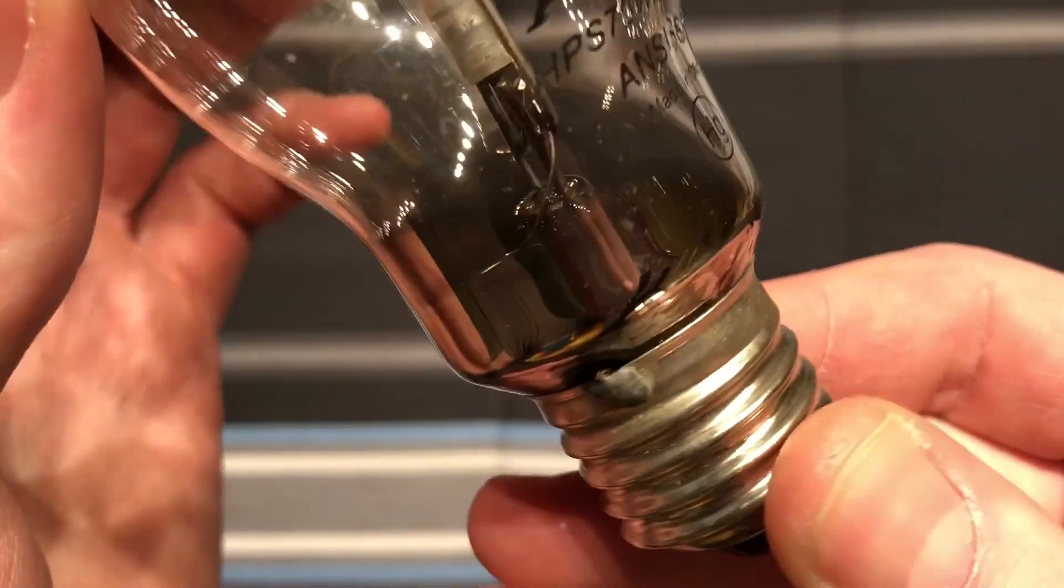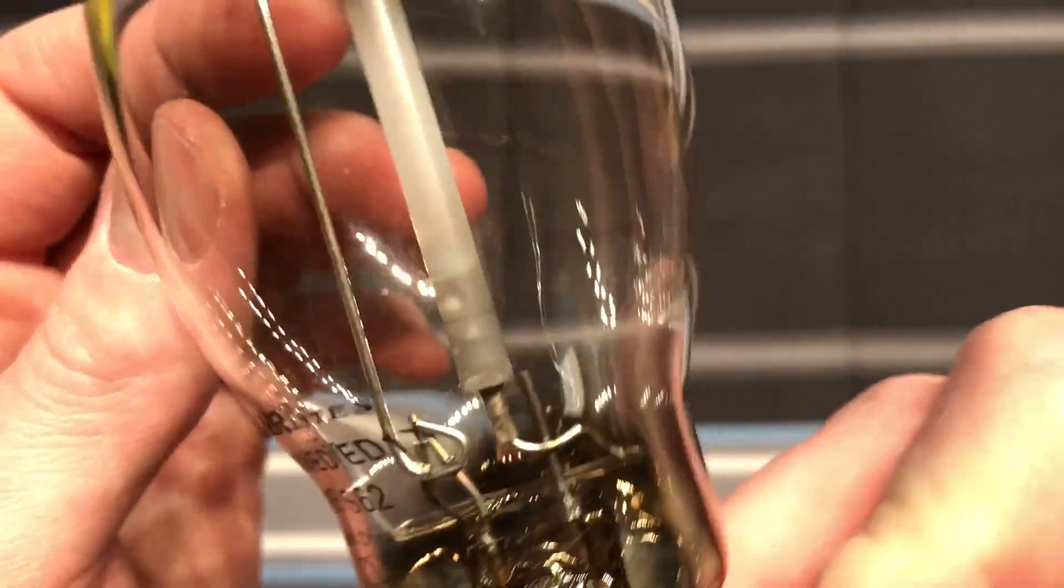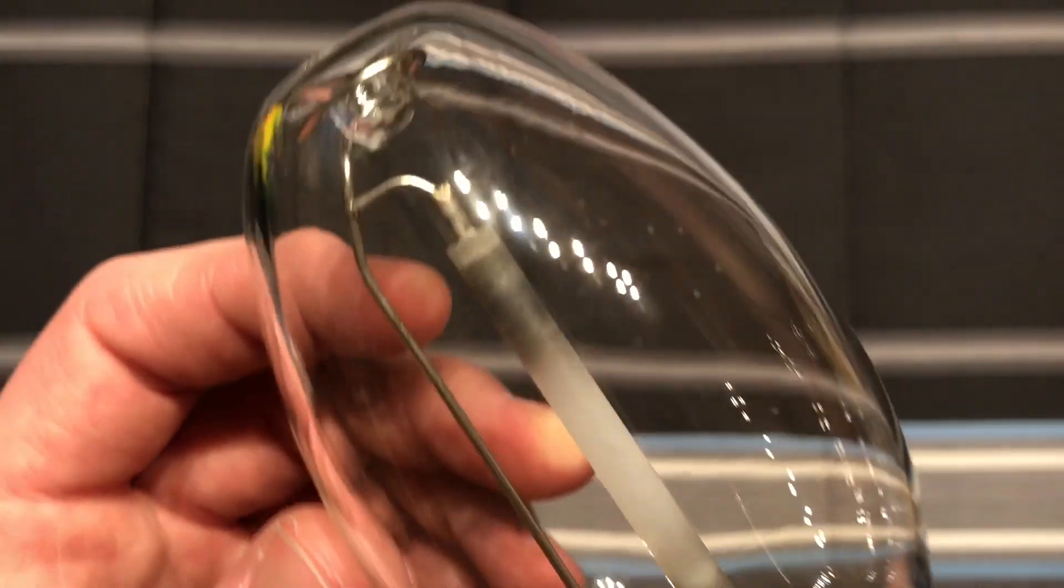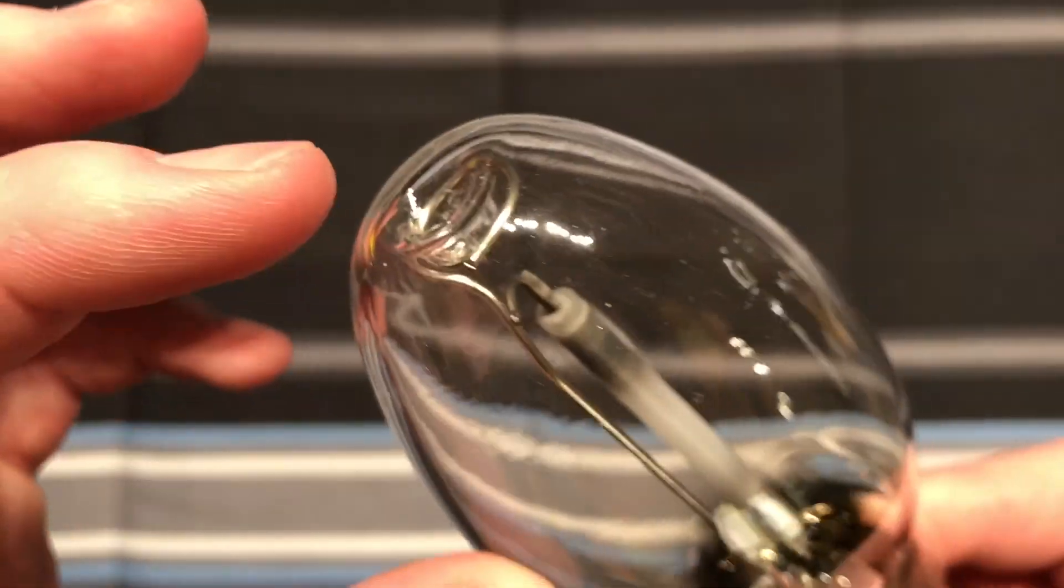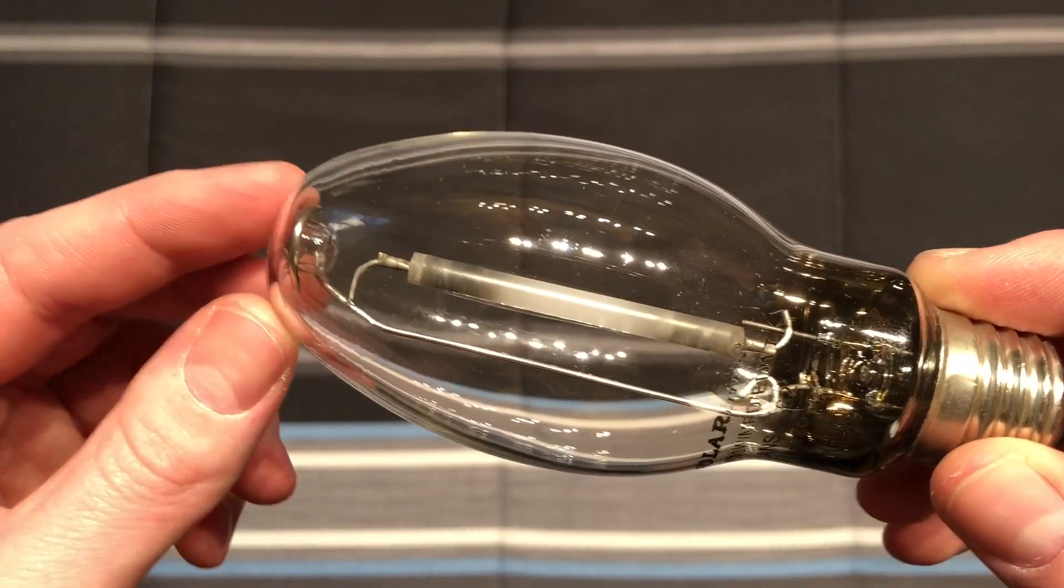PolarLites, we have the getter here at the bottom of the bulb, the shiny stuff there that you see. Pretty simple connections to help support the arc tube. One nice thing though is that it does have a dimple at the top to help support it as well.